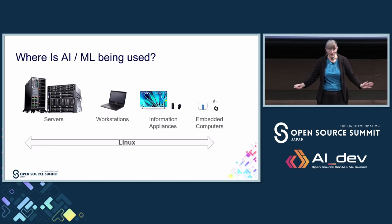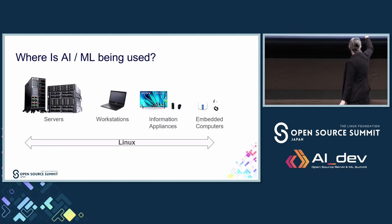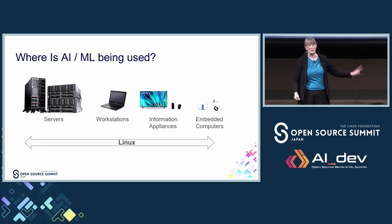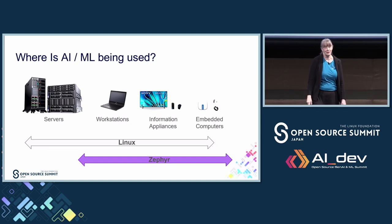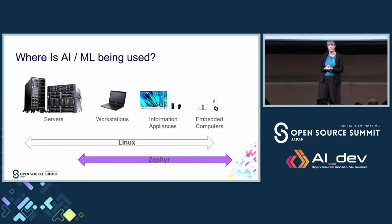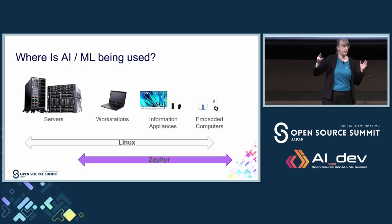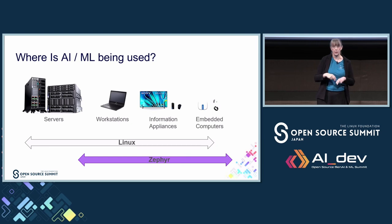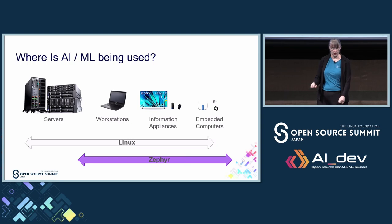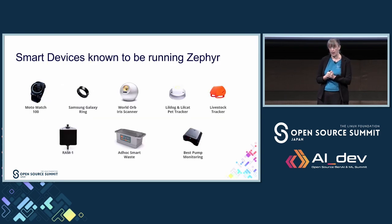Linux is on most of these computers — it goes quite far, though it doesn't go all the way on the embedded side, but it certainly goes way up into the servers. And Zephyr is now starting to show up on those information appliances and the deeply embedded computers. We also start to see it in the firmware for workstations and servers — when those devices are powering down, Zephyr is used in some firmwares just for monitoring the devices to figure out when they should wake up again. It uses a lot less power and this helps with the overall performance of these devices.